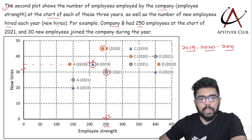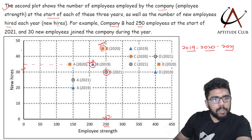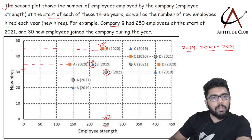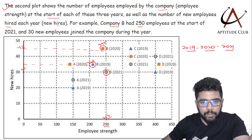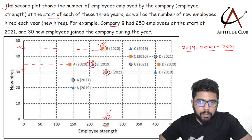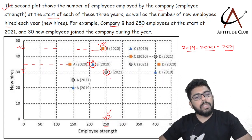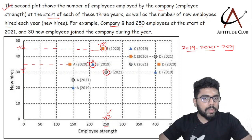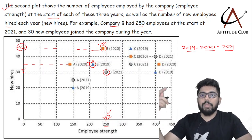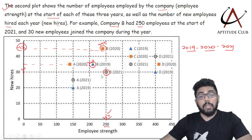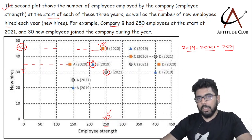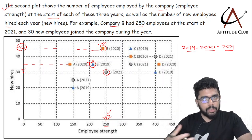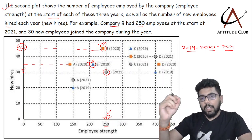Here's what's interesting: in 2020 company B had around 240 employees and 45 employees joined, so the total should have been 285 — but in 2021 it's only 250. That means some employees are also leaving the company each year. This information is hidden in the data and we need to calculate how many employees are leaving per year.